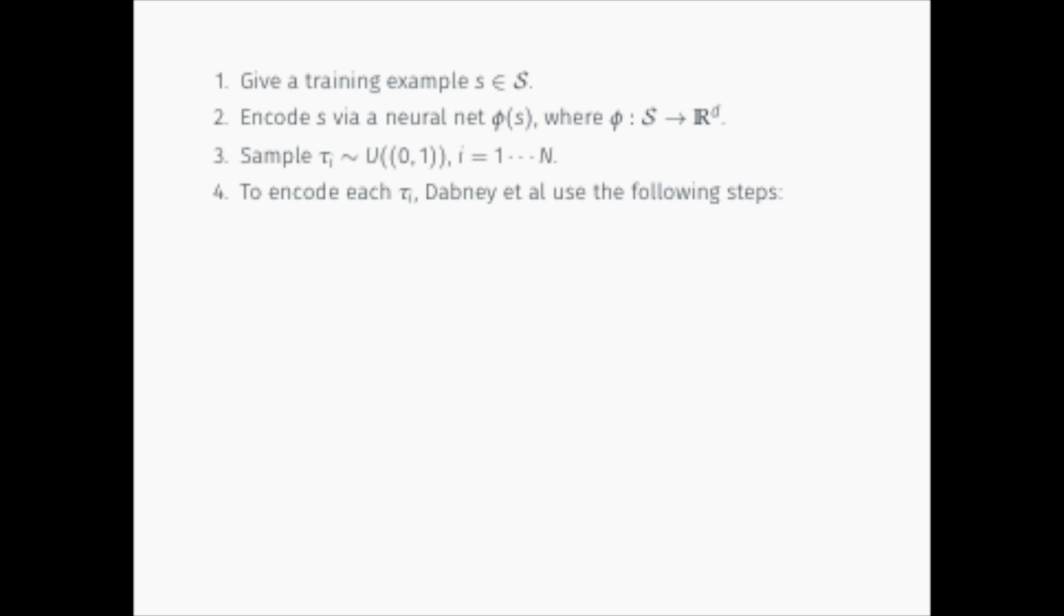Then encode each tile in the following way. Use cosine embedding to map tile to a d-dimensional vector. Pass the vector Z through another single-layer MLP psi to obtain the final embedding of tau.